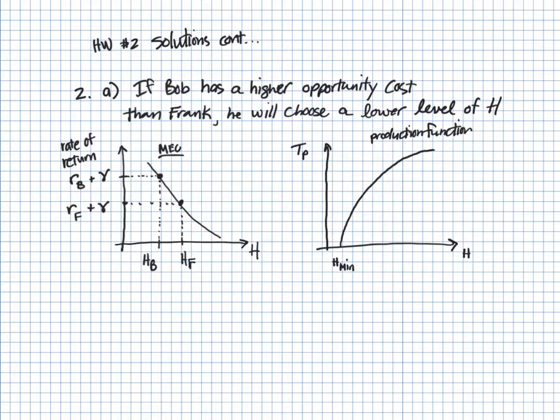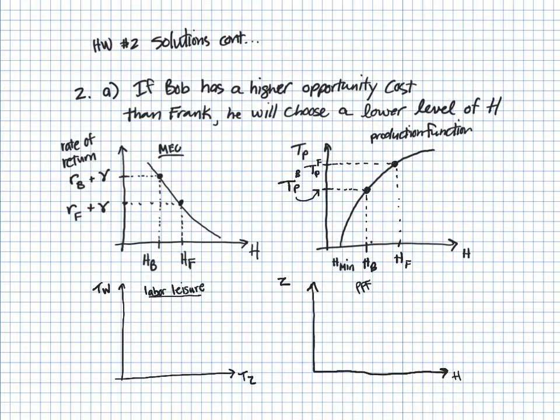So we can plot the levels of health that Bob and Frank have over here on the production function. So HB will give us the productive time TP, and let's call this Bob's productive time. Frank has more health now in this example, so he's further to the right along the x-axis. Go up to the production function. We see that Frank is now going to have more productive time available. Let's call this TP F.